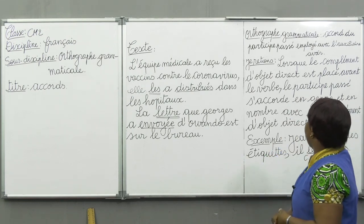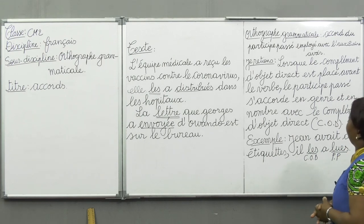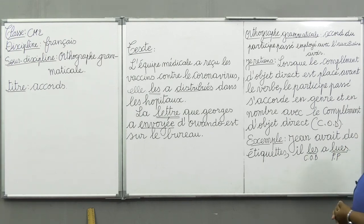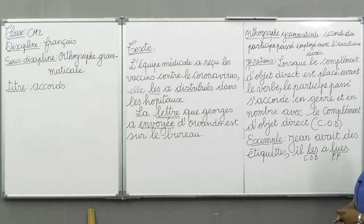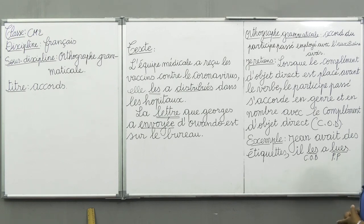Nous allons lire la leçon qui est au tableau. Orthographe grammaticale — Accord du participe passé employé avec l'auxiliaire avoir. Je retiens : lorsque le complément d'objet direct est placé avant le verbe, le participe passé s'accorde en genre et en nombre avec le complément d'objet direct. Exemple : Jean avait des étiquettes. Il les a lues.